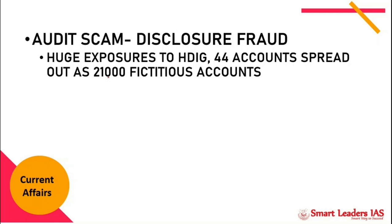This crisis was not related to the deterioration of asset quality. It was purely an audit scam — a disclosure fraud. The bank had given loans to one particular family of institutions called the Housing Development Infrastructure Group. They had opened nearly 44 accounts and had been exposed to nearly 6,000 crores of loans over nearly 7 years. Over time, these 44 accounts were spread out as 21,000 fake accounts. After a worker in PMC flagged this to the RBI, the RBI took control of PMC and imposed restrictions on its normal functioning.